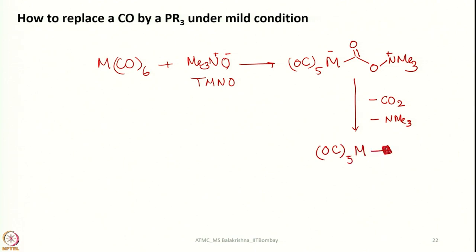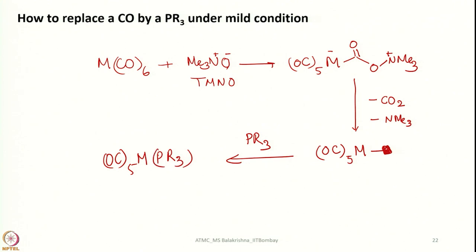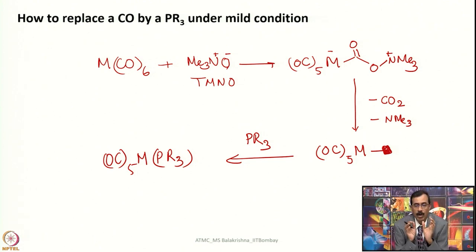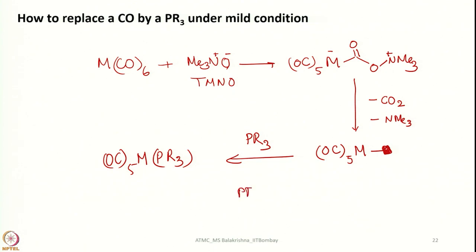The intermediate readily loses a molecule of carbon dioxide and a molecule of trimethylamine to generate a vacant site on the metal. Now, if we add a tertiary phosphine at this stage, we can very conveniently make a phosphine complex. One can then add one more equivalent of TMNO to substitute one more carbon monoxide and keep on doing this. If the phosphine is not very bulky and the phosphorus substituents are strong electron-withdrawing groups, one can possibly replace all carbon monoxide from a hexacarbonyl.